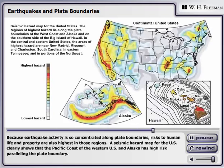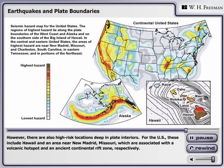Because earthquake activity is so concentrated along plate boundaries, risks to human life and property are also highest in those regions. A seismic hazard map for the U.S. clearly shows that the Pacific coast of the western U.S. and Alaska has high risk paralleling the plate boundary.